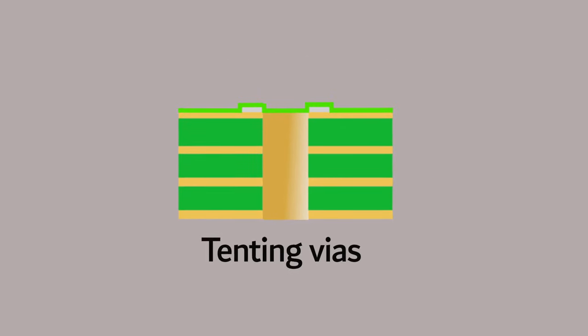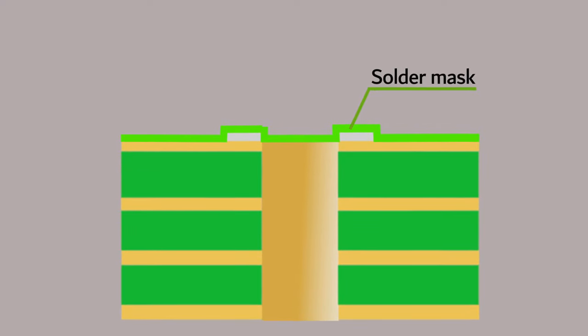Tenting vias is the process to cover the annular ring of the via with solder mask to achieve insulation. It is important to ensure that the annular ring is fully covered with the solder mask, and the solder mask is thick enough to avoid accidental short circuits or contact with the circuit.